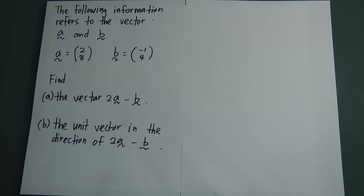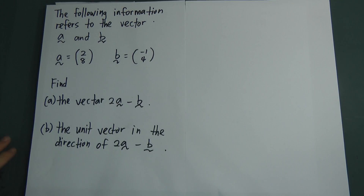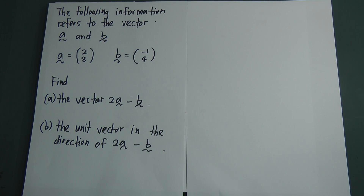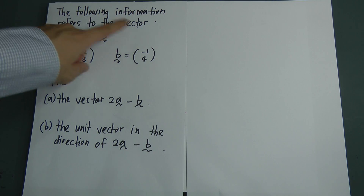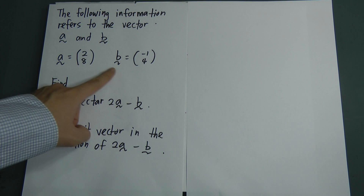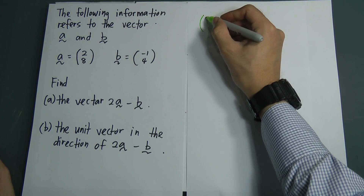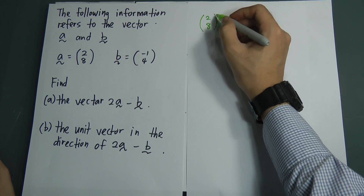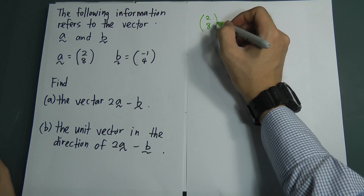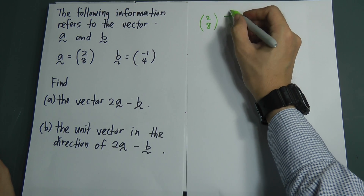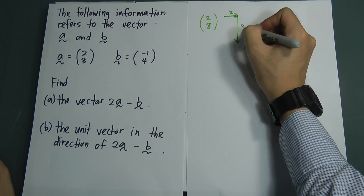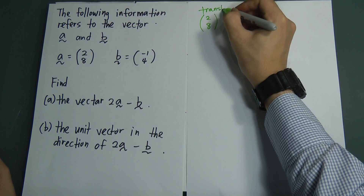Today I'm going to explain vectors for Form 5, Chapter 4. These two examples I'm explaining today only come out in Paper 1 for the exam. The question refers to vectors a and b. First you must understand what the notation means — for example, a vector written as (2, 8) relates to what you learned in translation: 2 is movement along the x-axis and 8 is movement along the y-axis.